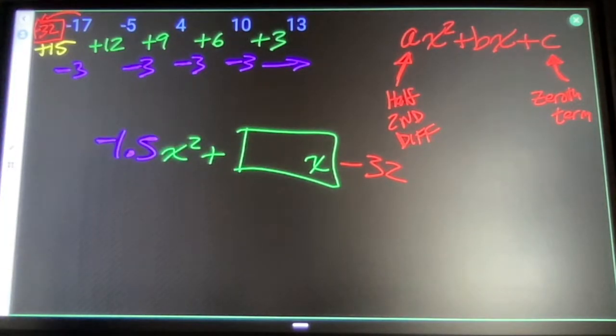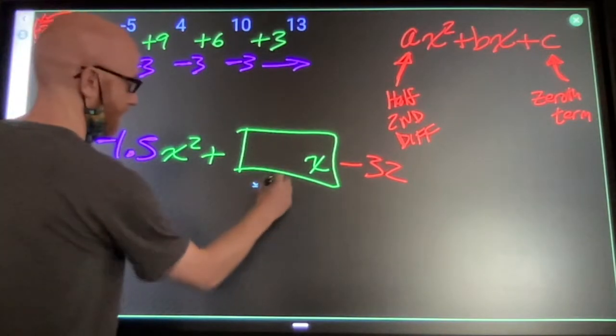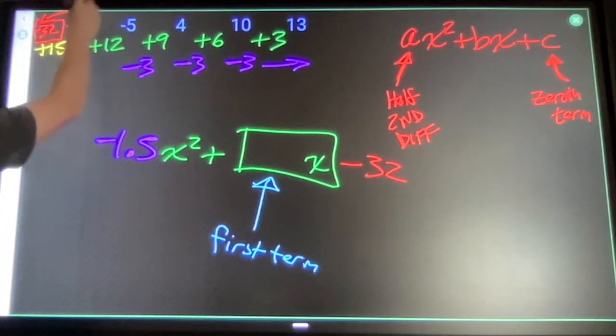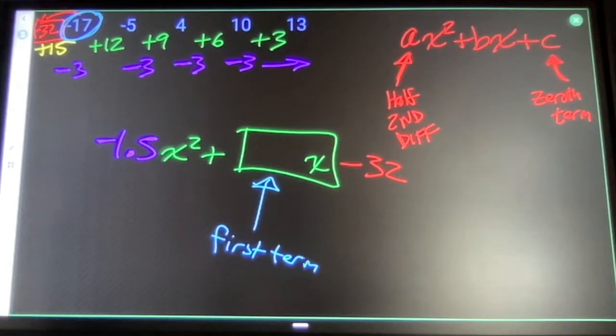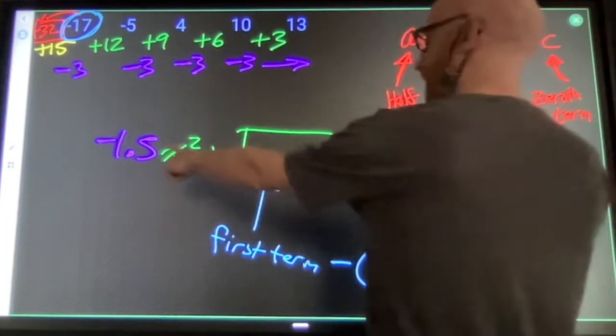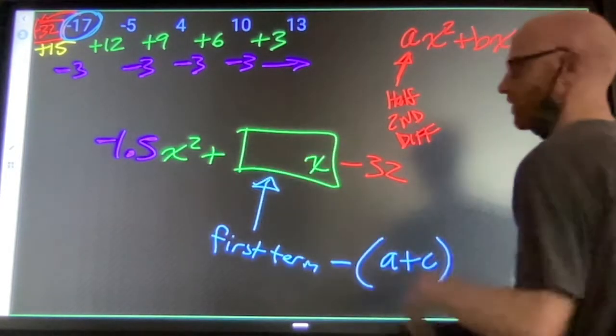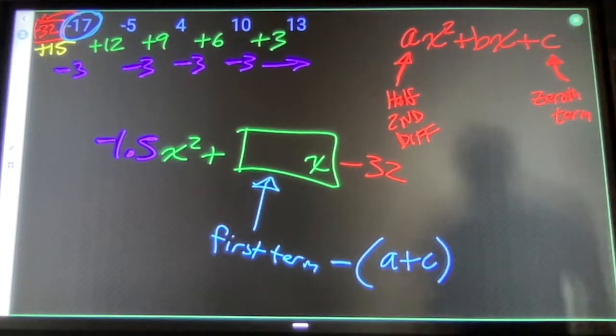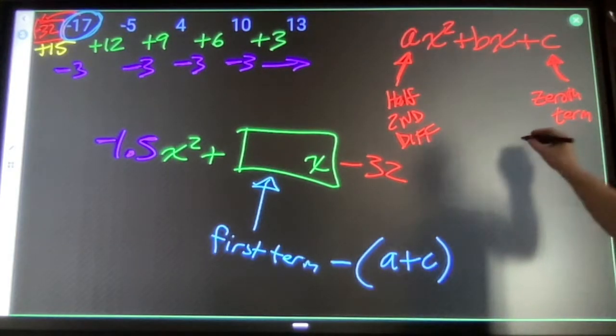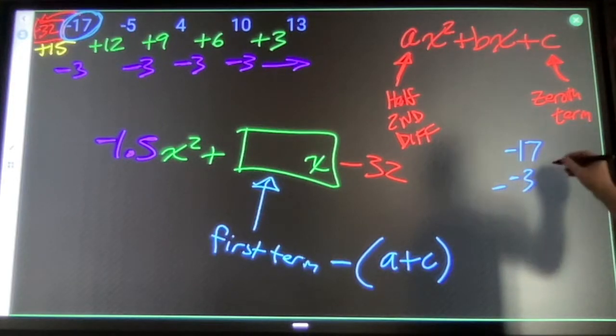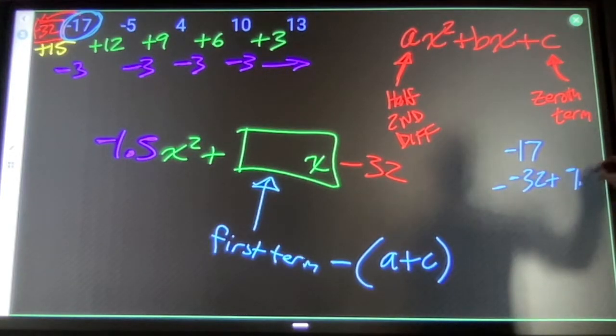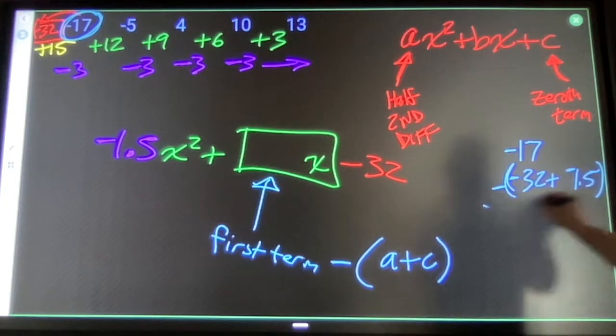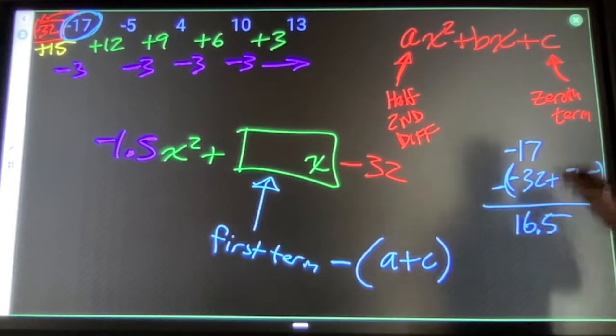The way to get this middle number is: this is my first term. My first term minus these guys. So my first term, negative 17, minus negative 32 and also minus 1.5. So negative 17 minus negative 32 plus negative 1.5. This is 33.5. I will get 16.5 when I do that subtraction.